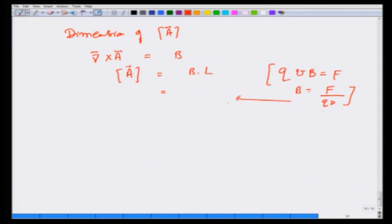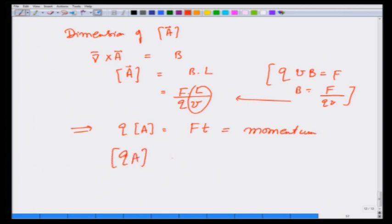B recall that we have Q V B equals force, and therefore B is force over Q V. Let us substitute that here and I get force times length divided by Q V as the dimensions of A. And therefore, Q A has dimension of F L divided by V, I can write as time F times T is momentum. So, Q A has dimension of momentum, although it is not directly momentum of a particle or anything, but we later see that this does play a role. Right now we leave it at that.